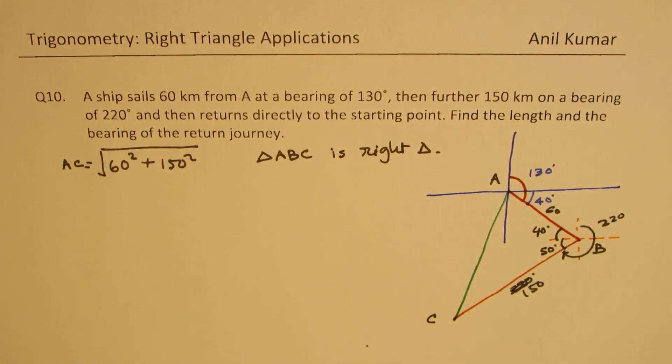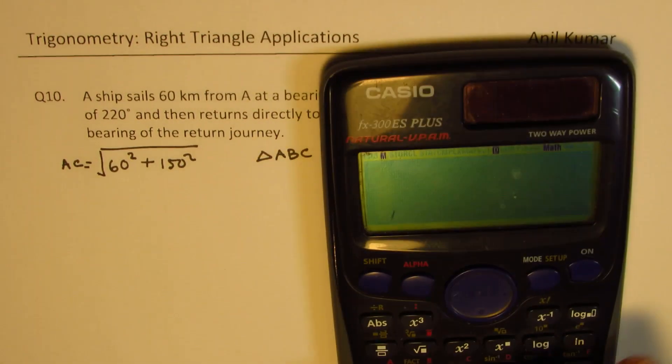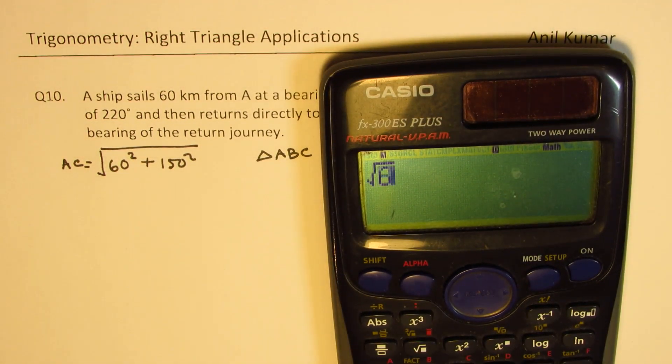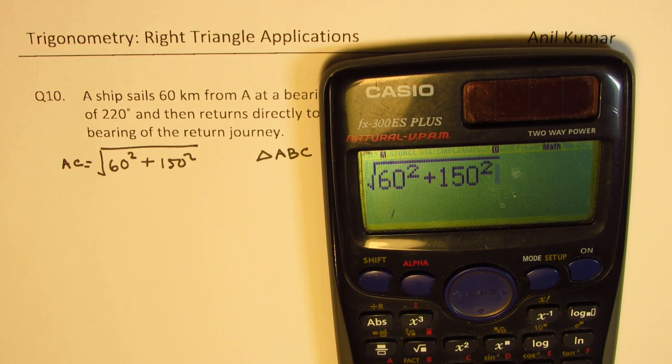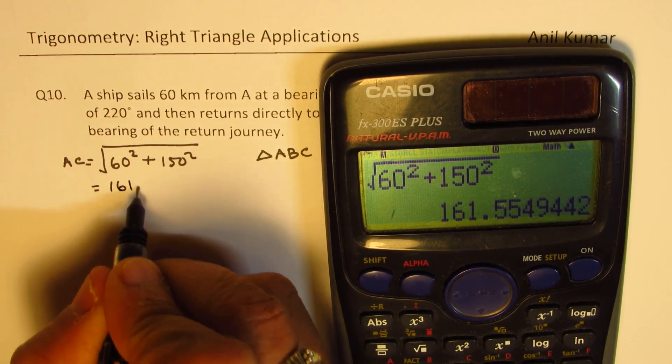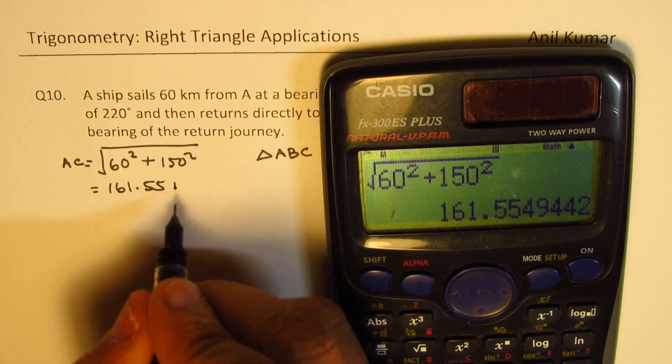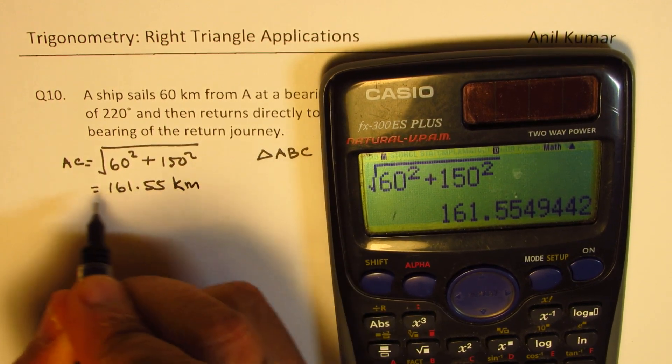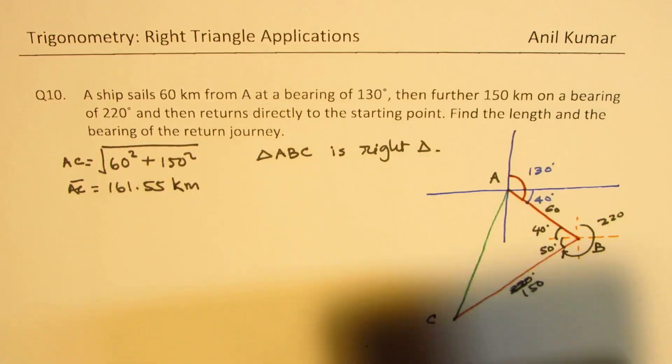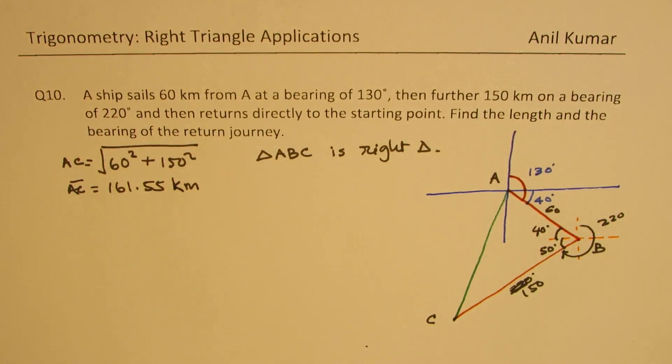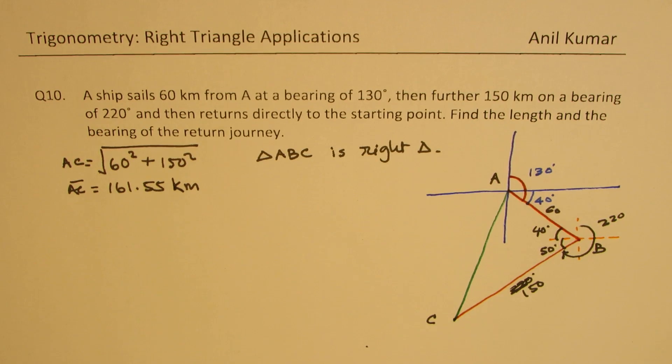So let's find this first. So we have square root of 60 square plus 150 square, which in decimal is 161.55. The units are kilometers. So the ship has to return 161.55 kilometers.